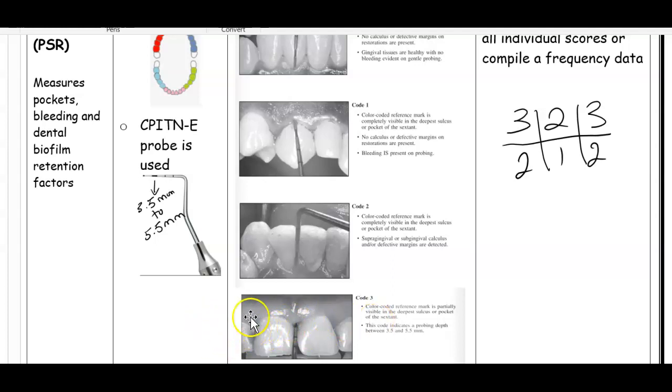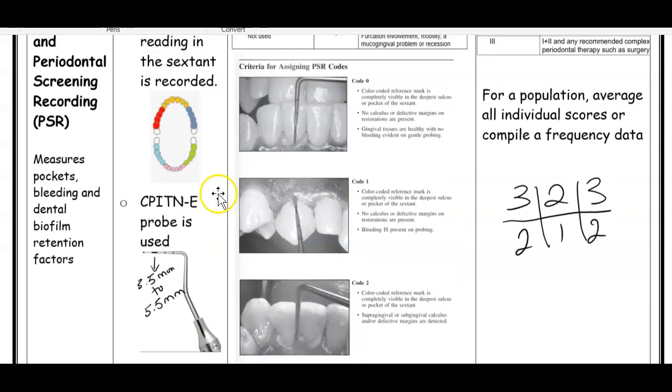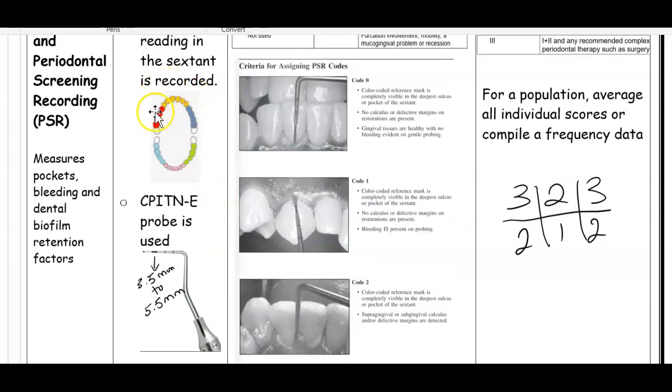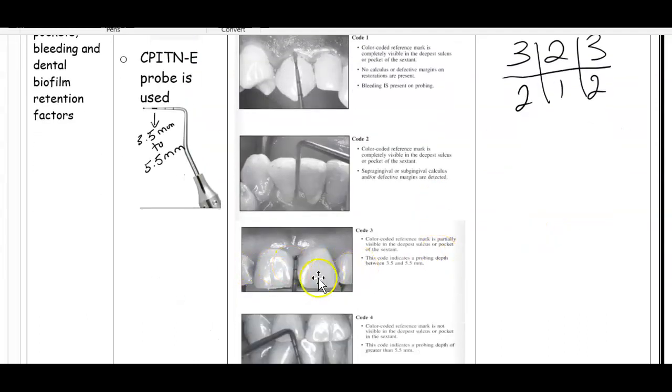The way you do it is you probe the entire section. In this case, you probe the entire anterior section, and then the deepest code gets recorded. If I probe the entire anterior section and this was my deepest reading, everywhere else it wasn't as deep, that code three gets put in. In this case, I put it in section one and section three. Here we see it on section two.